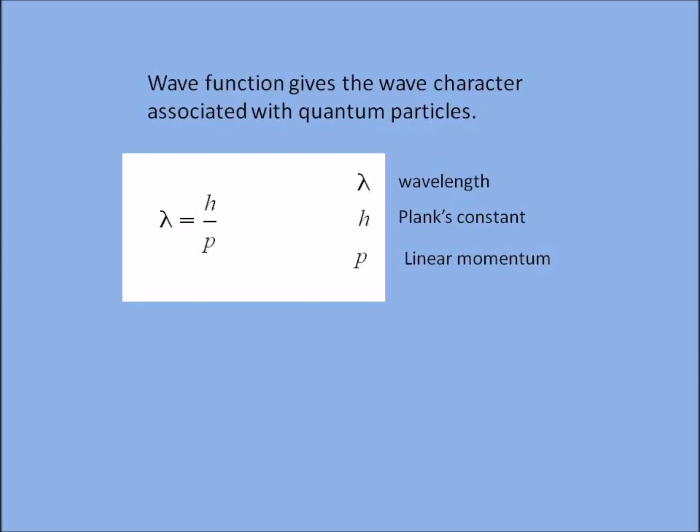We can see from this equation if the linear momentum of particle goes on increasing, the wavelength of the matter wave goes on decreasing. For quantum particles the mass is very very low, that's why momentum is also very low, and hence the wavelength of their matter wave is comparable with their size.